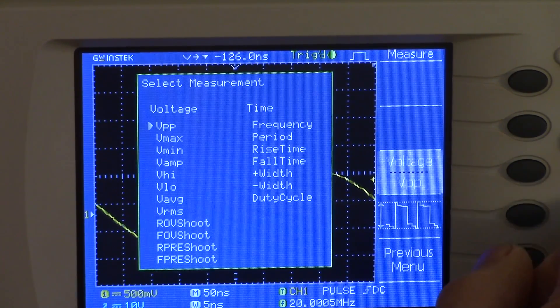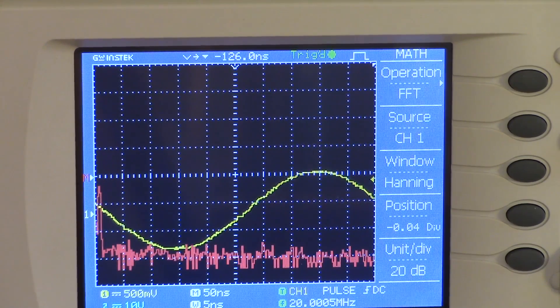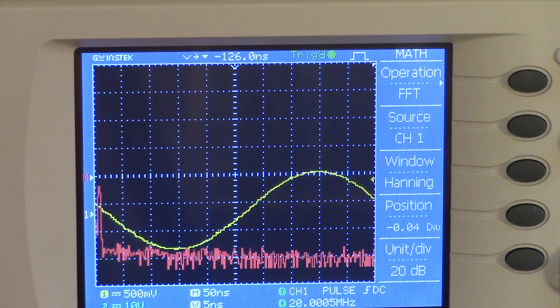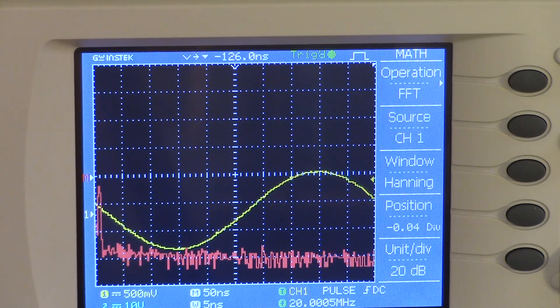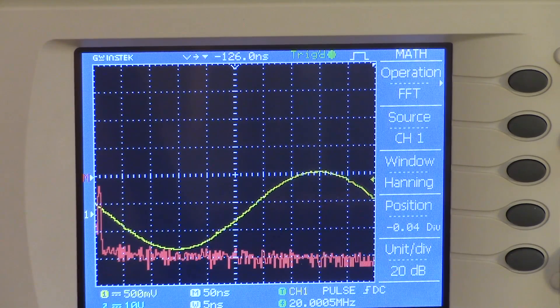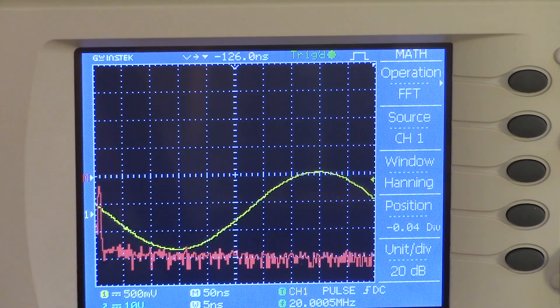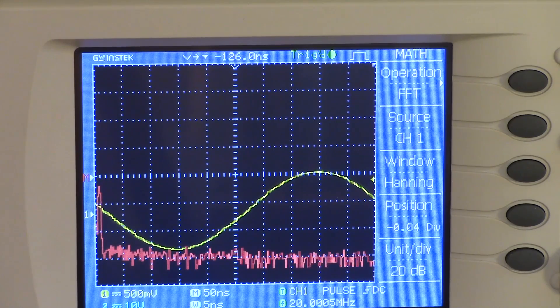It also has a math menu, like all these scopes do today. And you can display basically three things: the sum or difference of the two channels, or the fast Fourier transform, the FFT, of one of those channels. And that's what I'm showing here. You notice what you don't see. You don't see any display across the bottom indicating what the frequency is. So this really gives us very little information. I'd call the FFT features pretty much useless, since you can't figure out what the frequencies are of the various frequency components.